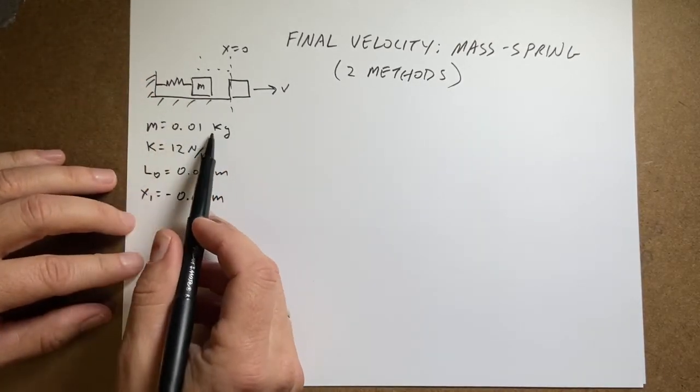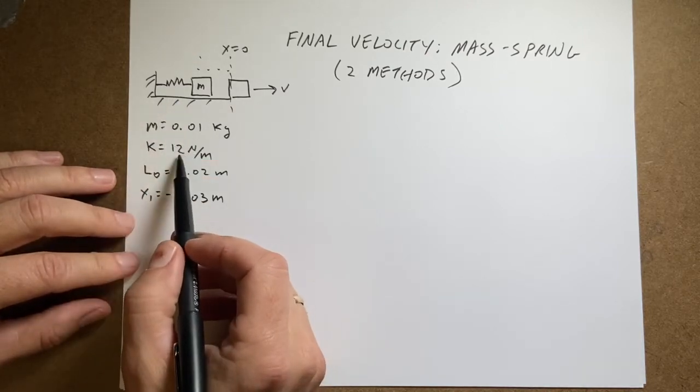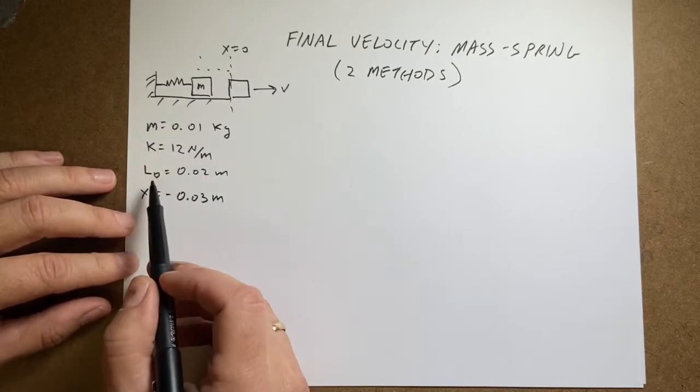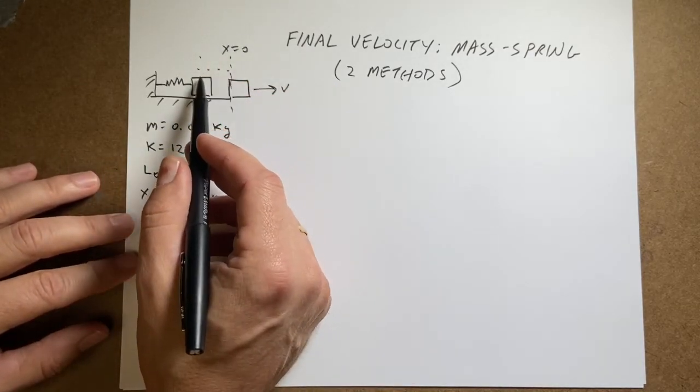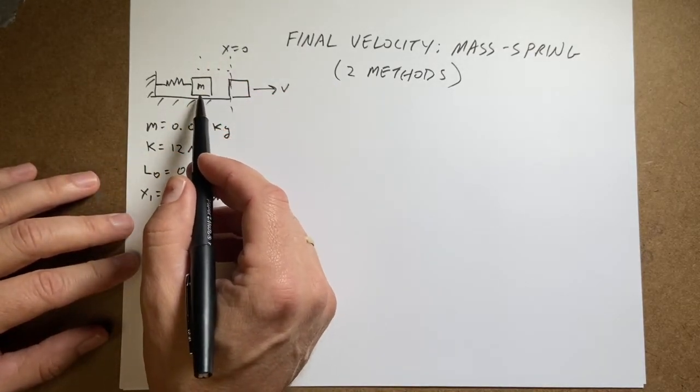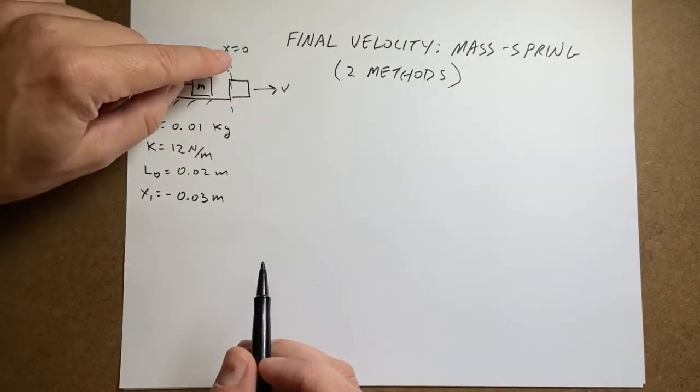The mass is 0.01 kilograms. The spring constant is 12.12 newtons per meter. Actually, I don't need this natural length the way I did this. I called this x equals zero. And then I said it starts here at x equals negative 0.03. So that's how far it got compressed. That's the unstretched length.